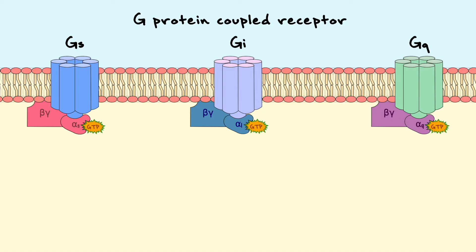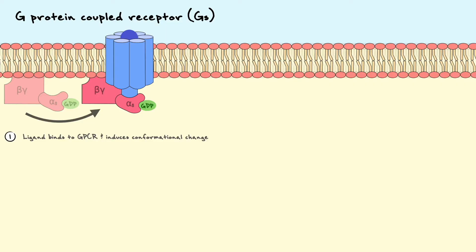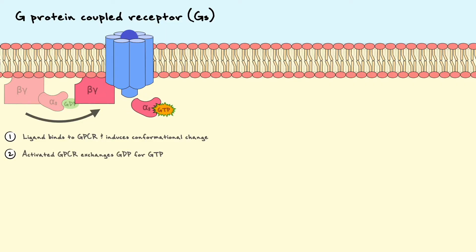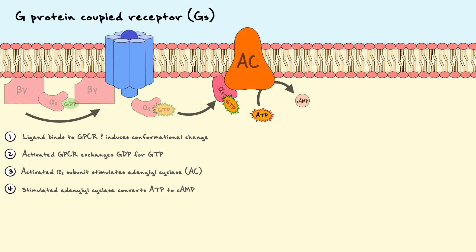The first G-protein pathway we will consider is the Gs pathway. We have our metabotropic G-protein coupled receptor and our G-protein. The ligand of the GPCR binds and induces a conformational change in the receptor. The activated receptor can now exchange the GDP from the alpha subunit for a GTP molecule, which activates the G-protein and causes the dissociation of the alpha subunit. The activated alpha-S subunit can now interact with its effector protein. The main effector of the alpha-S subunit is the integral membrane protein adenylyl cyclase, which becomes stimulated when the alpha-S subunit binds to it. This stimulation leads adenylyl cyclase to catalyze the conversion of ATP to cAMP. cAMP is what we refer to as a second messenger.